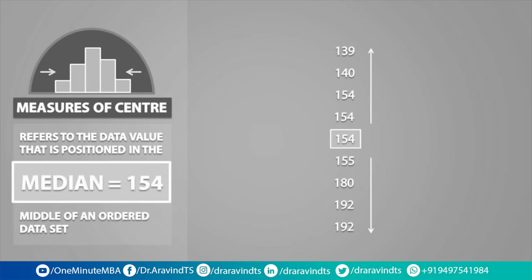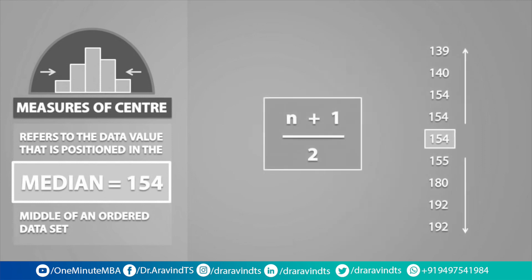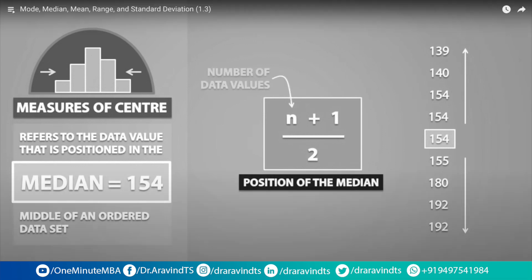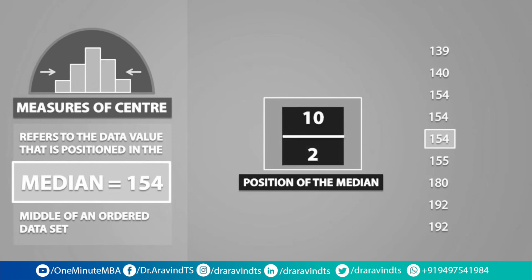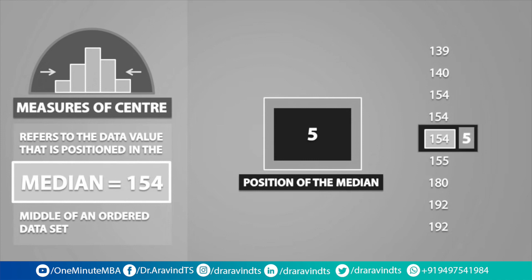When a data set is extremely large, it might be helpful to use the formula n plus 1 divided by 2. This formula tells us the position of the median, where n refers to the total number of data values. We have 9 values, so n equals 9. 9 plus 1 is 10, and 10 divided by 2 gives us 5. The median is equal to the value in the fifth position, which is 154. Note that we could have counted from the bottom and still get the same answer, as long as the data set is ordered.